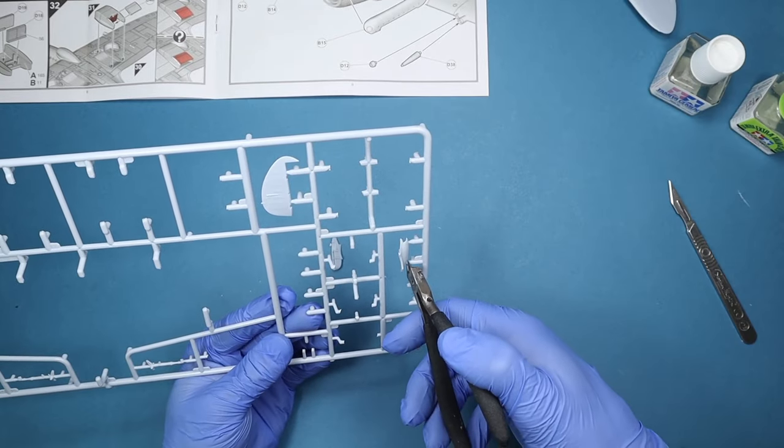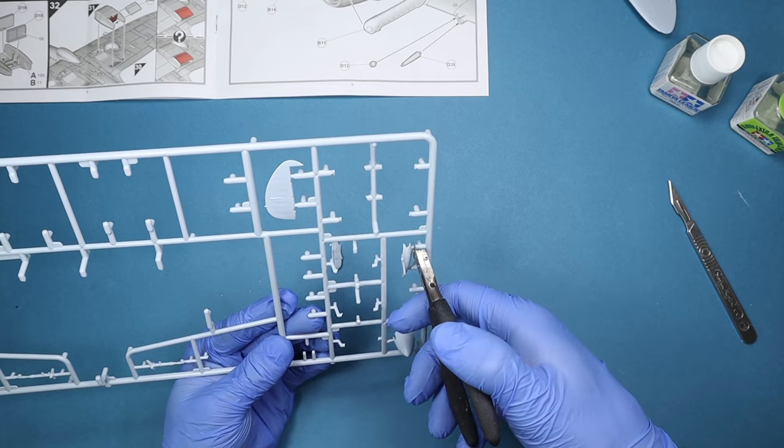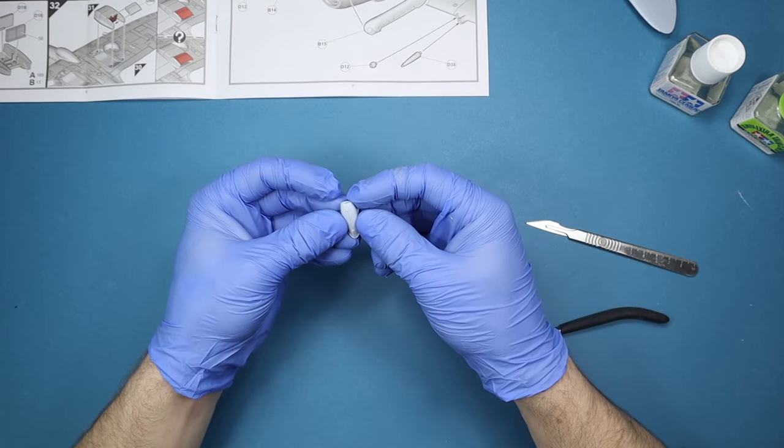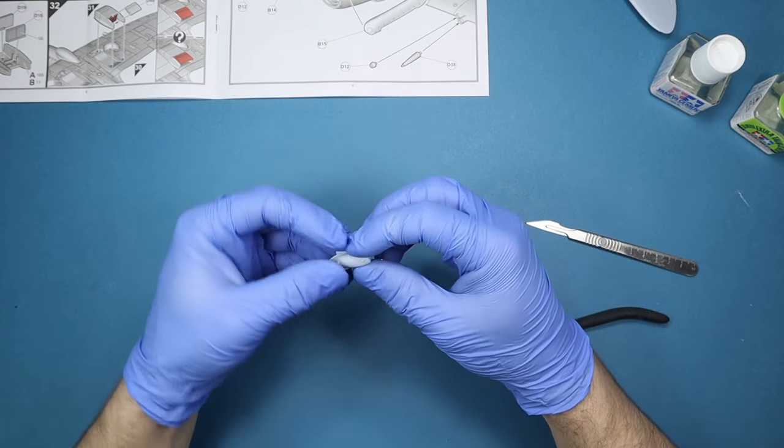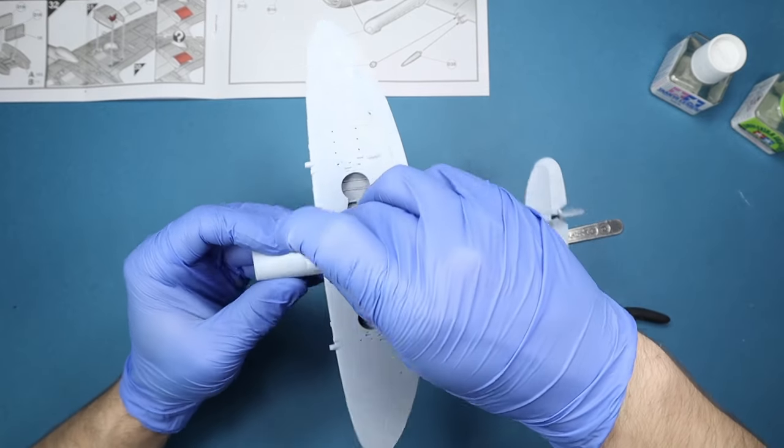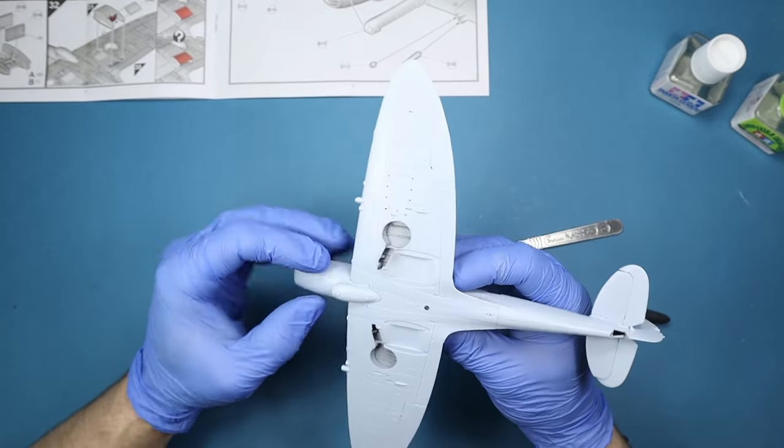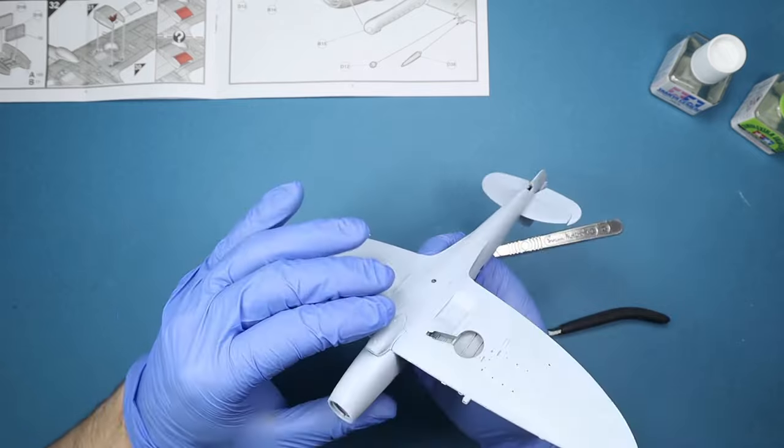Now for the air intake under the nose, it comes as two halves which means we'll be left with a center seam line. Sometimes it's best to fix the seams on parts like this before putting them on the model, but in this case we can see that we still have good accessibility even after it's added on.